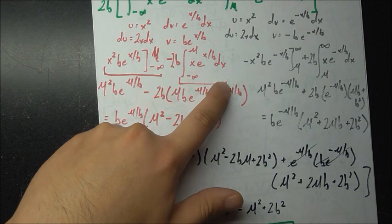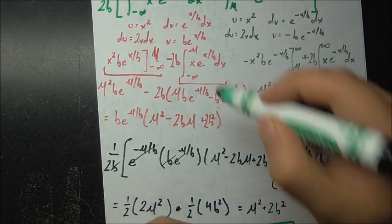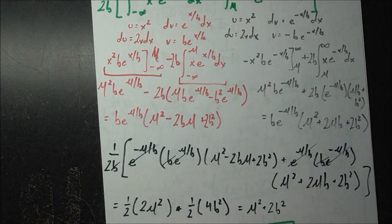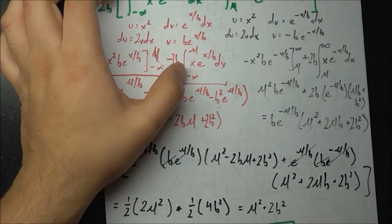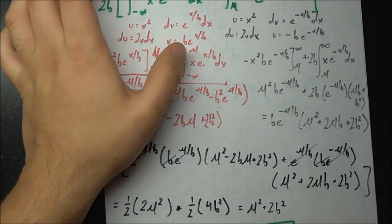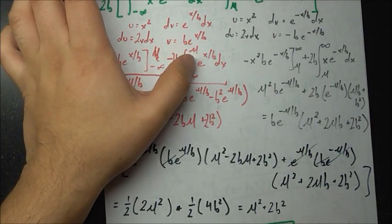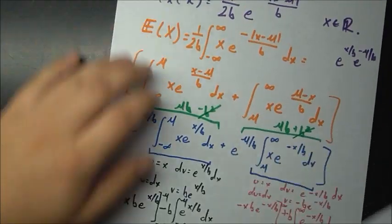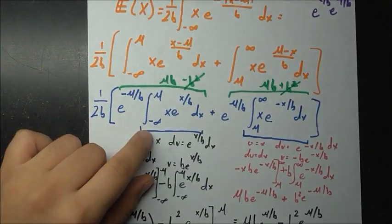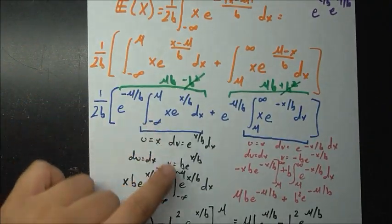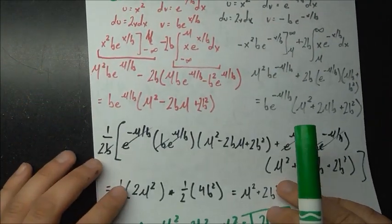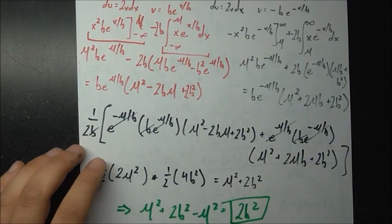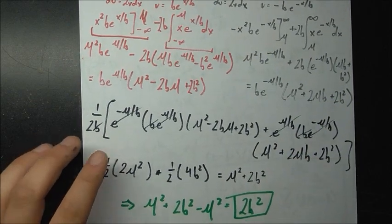You might think you need integration by parts again for the second term. But notice that the resulting integral from minus infinity to mu of x e to the x over b dx is exactly the integral we computed previously. So we can reuse that previous answer and get a nice simplification.